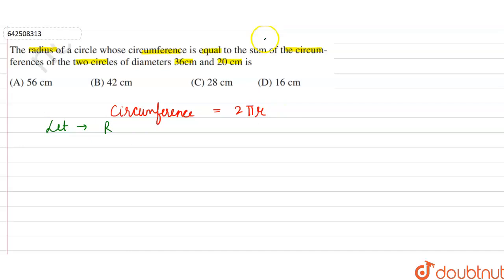The sum of circumferences of two circles with diameters 36 and 20 centimeters. Diameter 1 is 36 centimeters, therefore radius 1 equals 36 divided by 2, which is 18 centimeters. Similarly, diameter 2 is 20 centimeters, therefore radius 2 equals 20 divided by 2, which equals 10 centimeters.